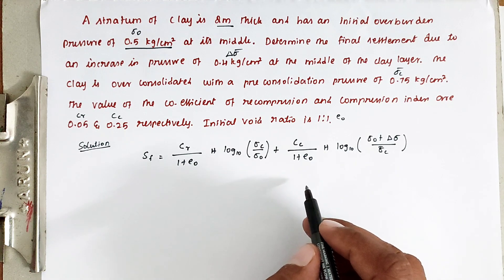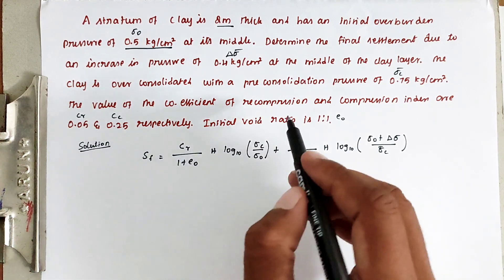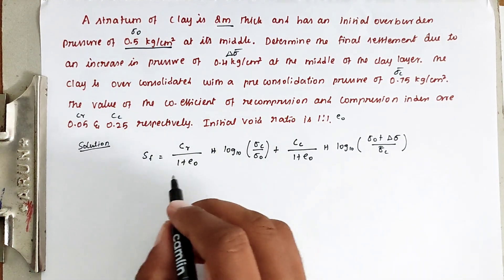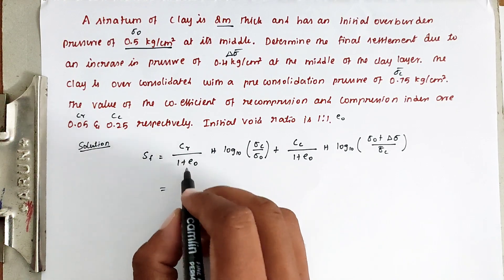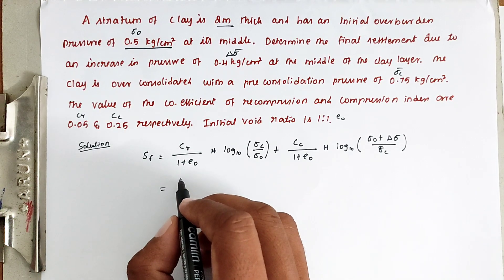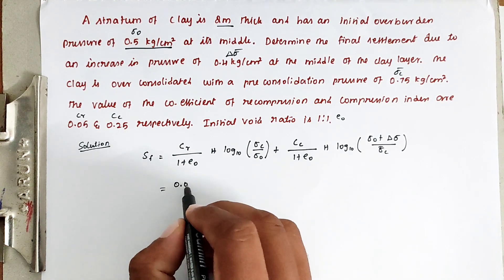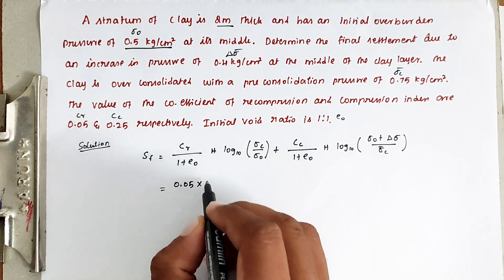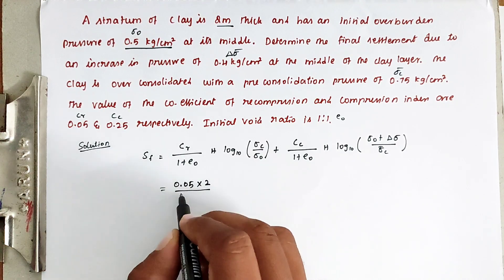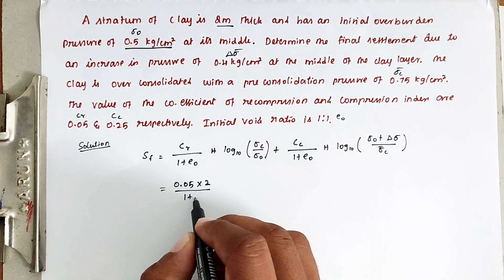Now Cr value is given, that is 0.05, into h value is 2, divided by 1 plus e naught. So e naught value is 1.1.